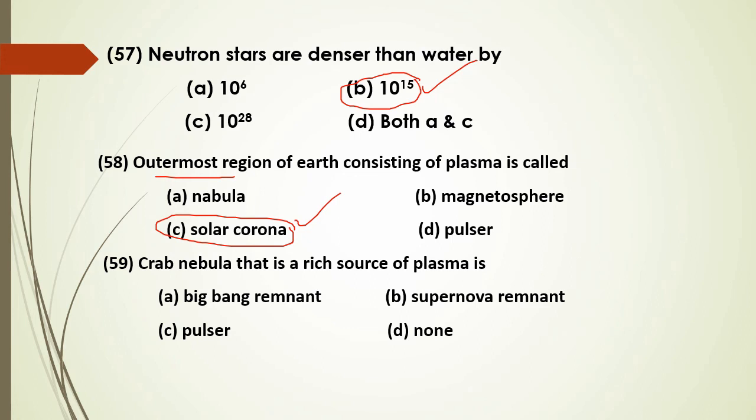A supernova is a stellar explosion and is a significant source of plasma in the universe. This concludes the MCQ discussion.